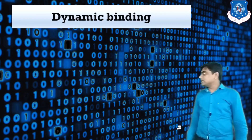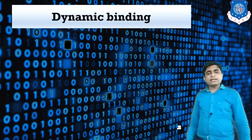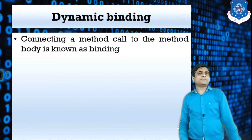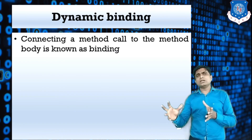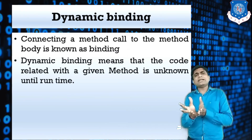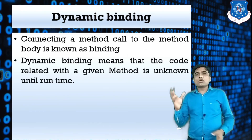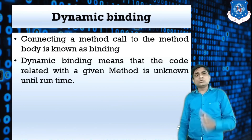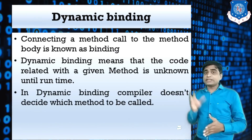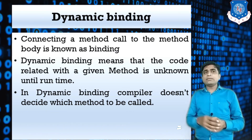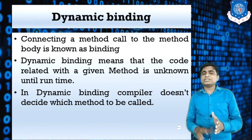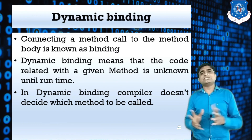Our next concept is dynamic binding. Binding means connecting a method call to the method body. Dynamic binding means the code related to the given method is unknown until runtime. Whenever you run the program, then and only then is the call resolved. In dynamic binding, the compiler does not decide which method is to be called — this is resolved at runtime. This concept is known as dynamic binding.